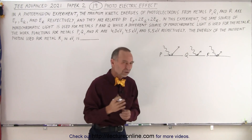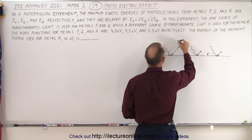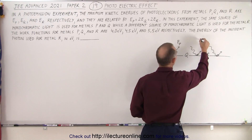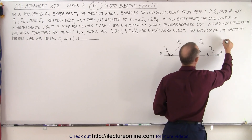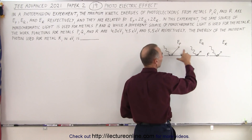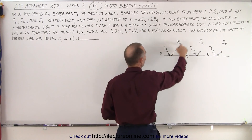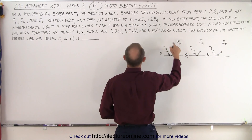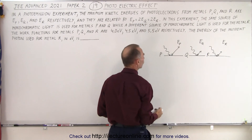They give us the energies of the escaping electrons: E_q for metal q, E_p for metal p, and E_r for metal r. I drew the arrow for metal p longer than the other two because E_p is twice the energy of the others.